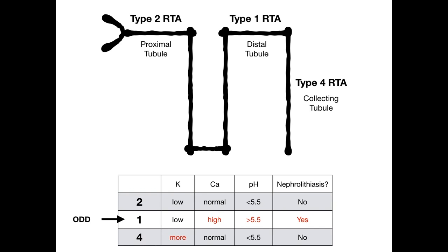Look at this chart — this is awesome. 2-1-4, low, low, more. You say 2-1-4 to remember not only the order of proximal, distal, collecting, but to remember potassium: low, low, more. And for the rest of the chart, the abnormal findings are in type 1 RTA because 1 is the only odd number — it's the odd man out. Calcium is high, pH is above 5.5, and yes, you will see nephrolithiasis. If you know this table, you're going to get 90% of these RTA questions right.